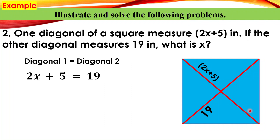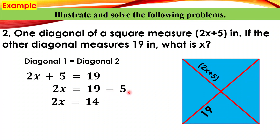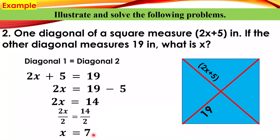We transpose 5 to the other side — from positive 5 it becomes minus 5. So 19 minus 5 gives us 14. Since the coefficient of x is 2, we divide both sides by 2. Thus 2x divided by 2 equals x, and 14 divided by 2 equals 7. The value of x is 7. Checking: 2 times 7 equals 14, plus 5 equals 19. Correct.